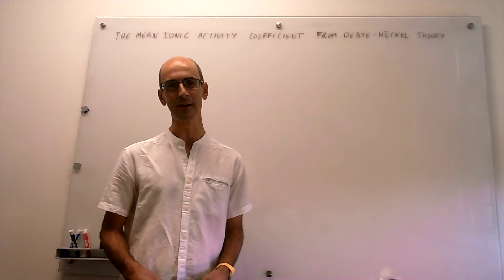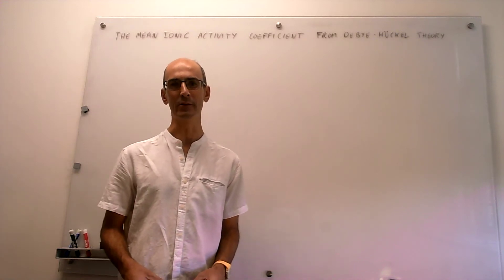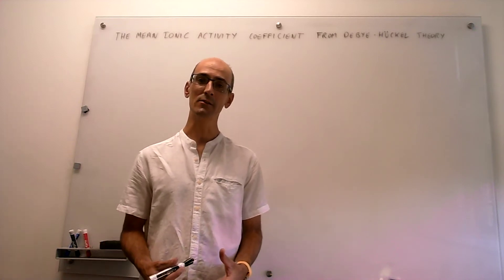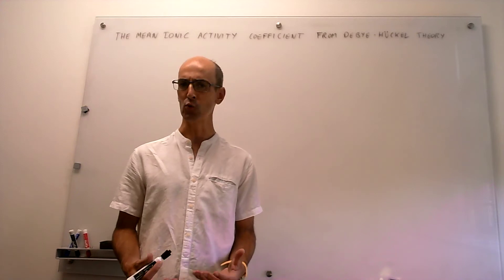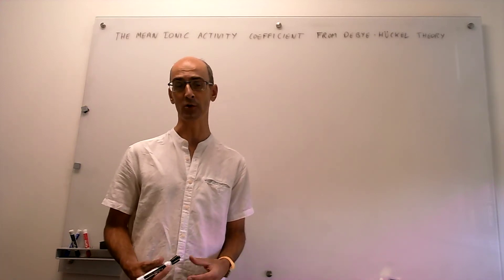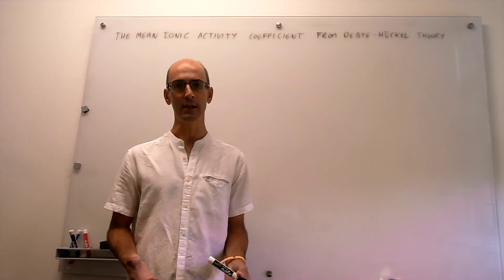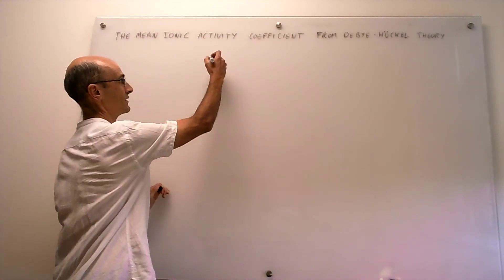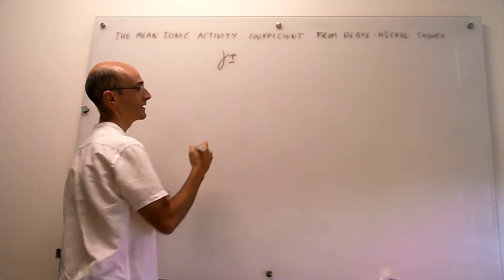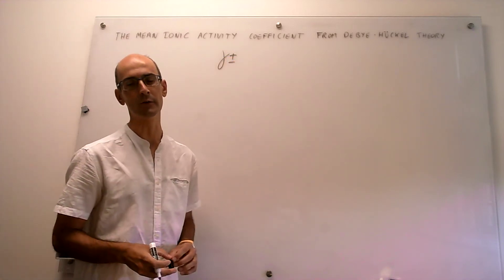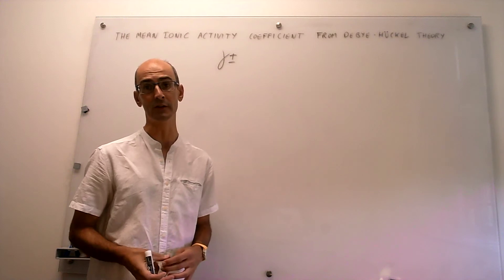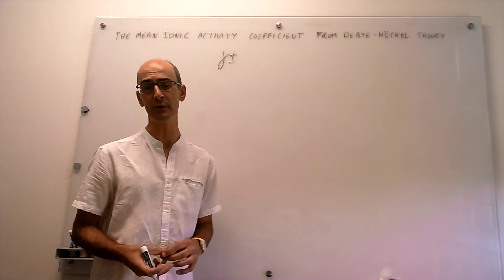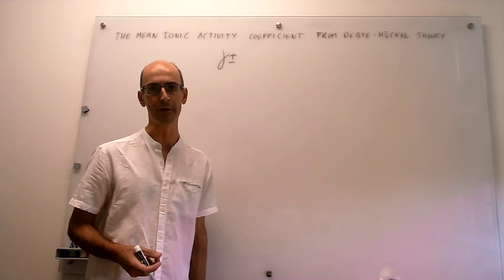In this video we learn how to calculate the mean ionic activity coefficient from the Debye-Hückel theory of electrolytes. We have seen that ionic solutions tend to deviate from ideality to a much larger extent than non-electrolyte solutions do, so we're going to handle these ionic solutions by using the mean ionic activity coefficient, whose definition we have seen in a previous video.